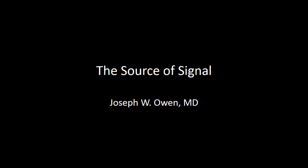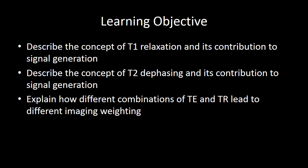In this screencast, we are going to discuss the contrast and source of signal in an MRI image. At the end of this screencast, you should be able to describe the concept of T1 relaxation and T2 dephasing and how they contribute to signal generation, and explain how different TR and TE times lead to image weighting.